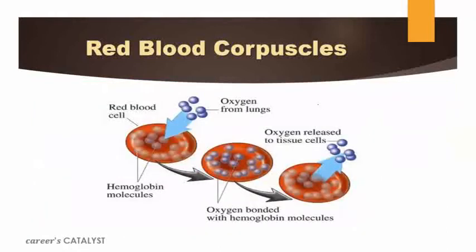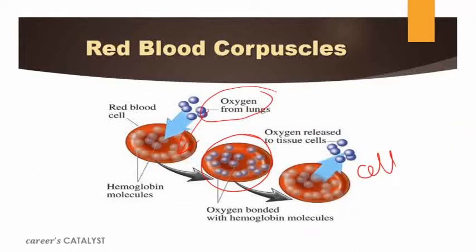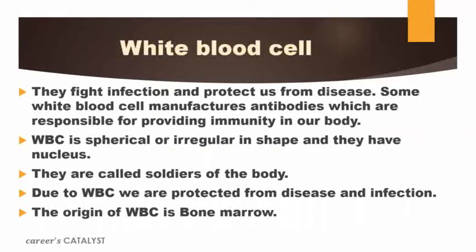As you can see in this diagram, RBC carries oxygen from the lungs and becomes oxygen-rich RBC. This oxygen-rich RBC reaches each and every cell of our body and then releases that oxygen to the cell. This is the main function which RBC performs inside our body. Now we will talk about white blood cells. The main function of WBC is that it acts as the soldier of our body — it provides immunity, fights against disease, and protects us from disease.